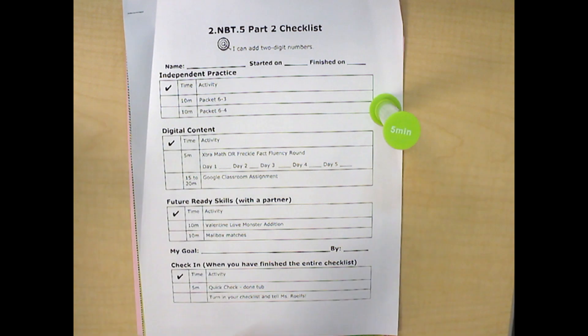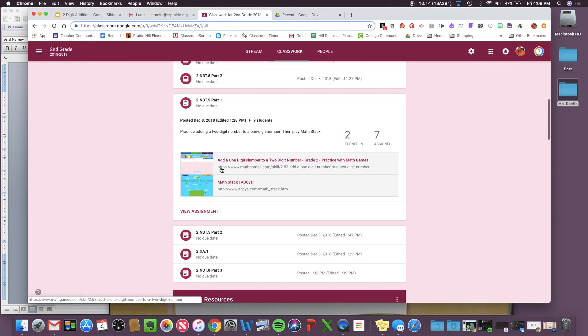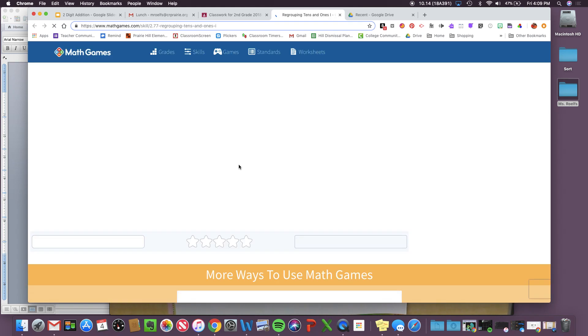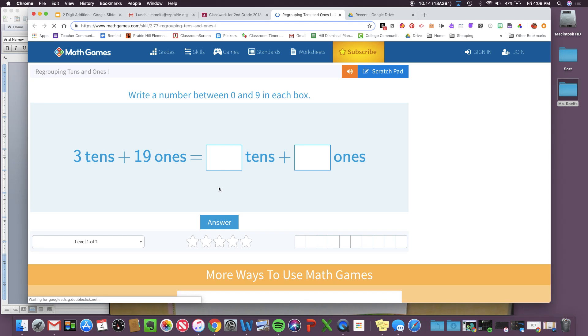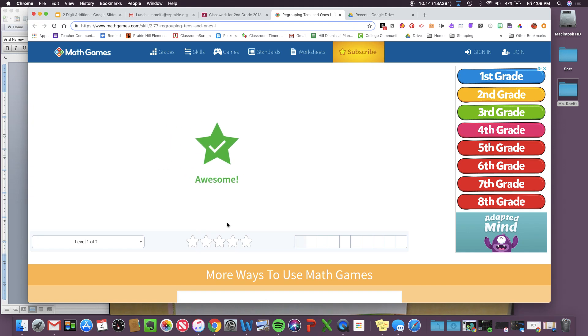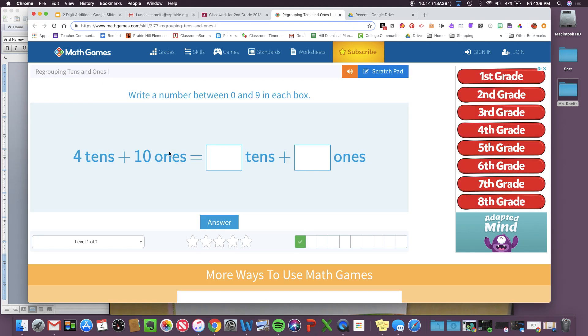Next, your Google Classroom assignment. You're going to go to 2.NBT.5 part 2, and there's only one game. All you're going to do is practicing regrouping 10s and 1s. You're going to say three 10s plus 19 1s, or four 10s plus nine 1s. You have to really think. How many 10s do we have? If we have 10 1s, that means you have one 10. So, really think carefully.